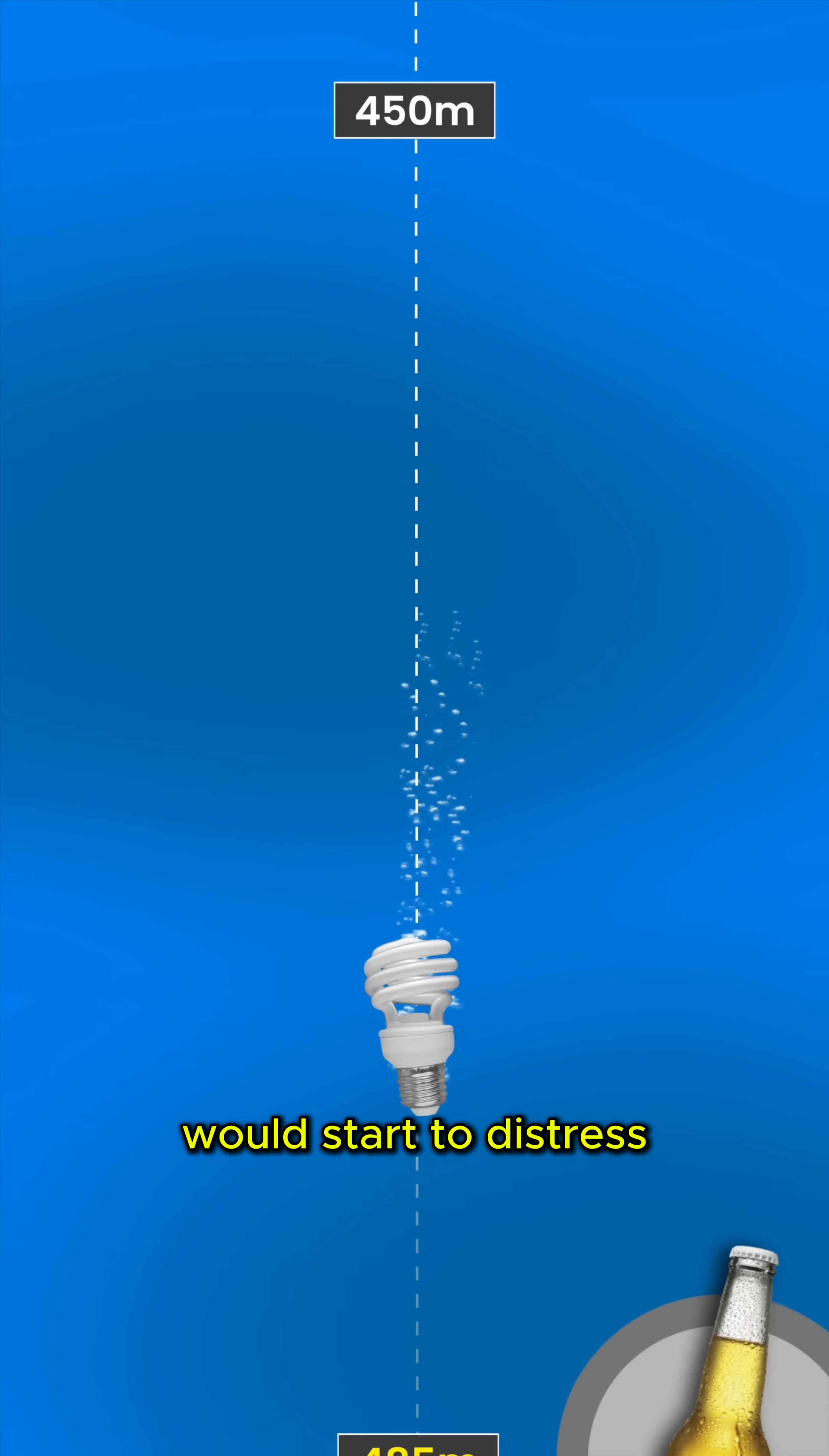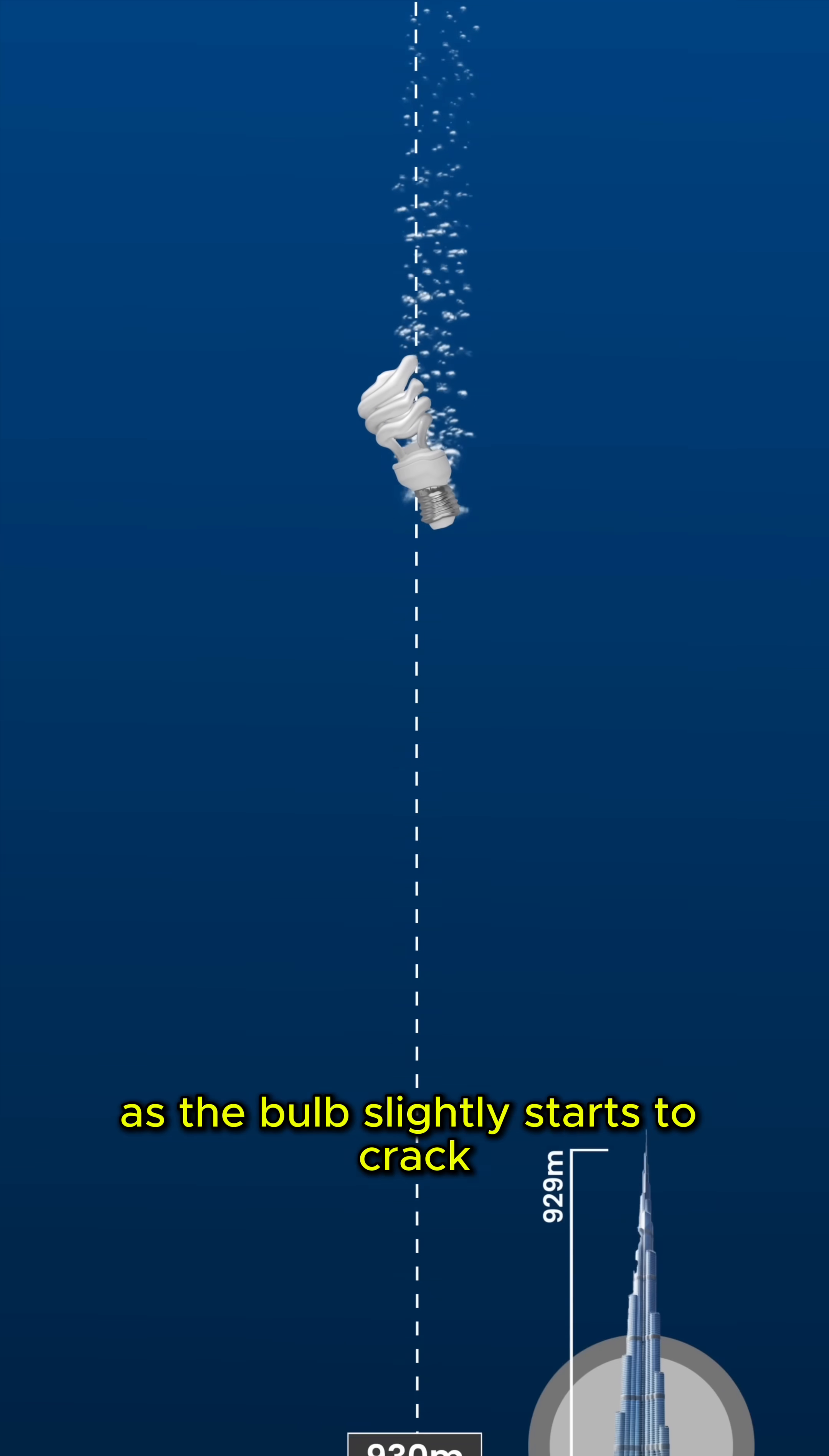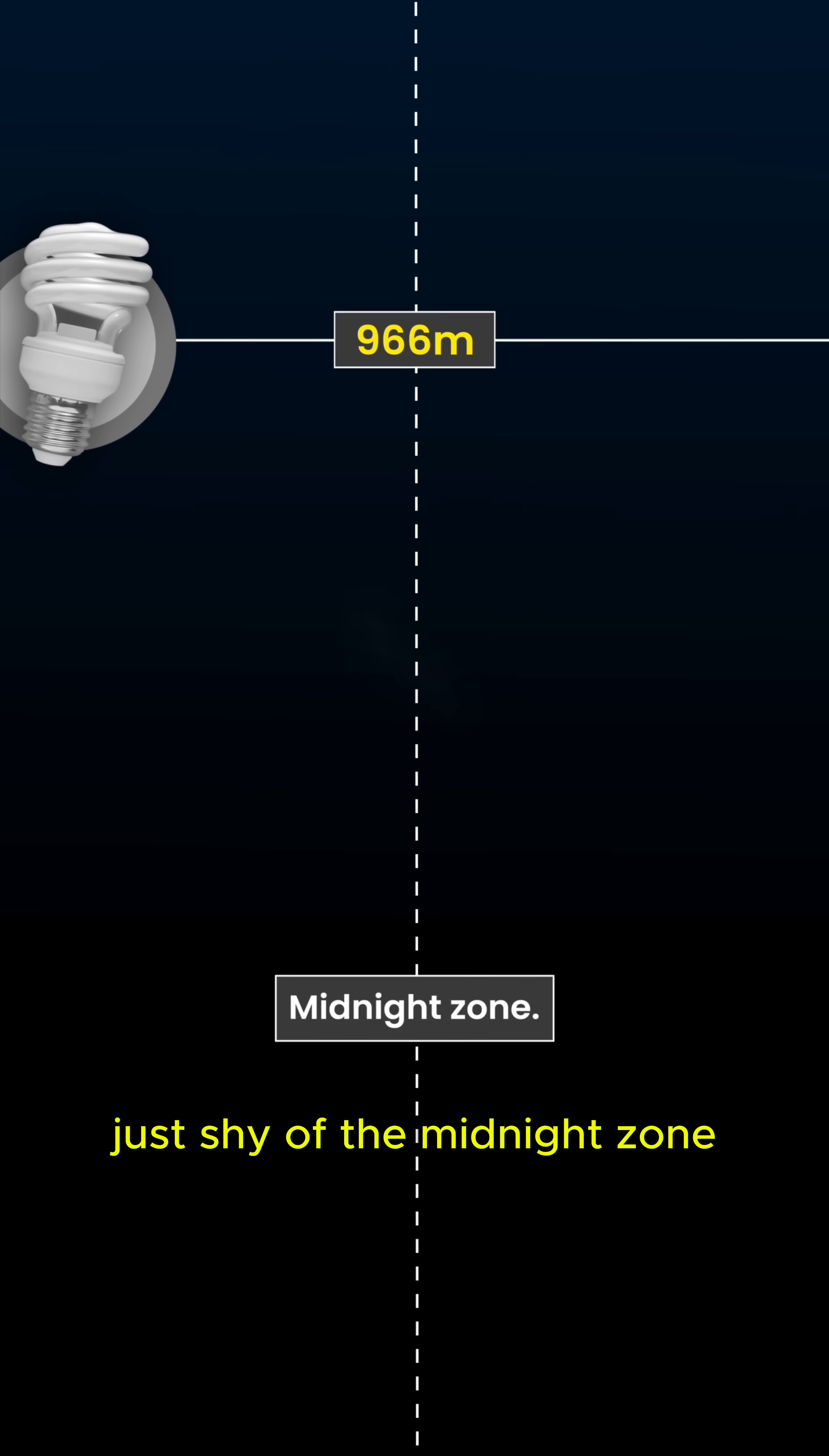The compact fluorescent light bulb would start to distress at a depth of 500 meters. The glass coils would start flexing as the bulb slightly starts to crack, until at 966 meters it implodes, just shy of the midnight zone.